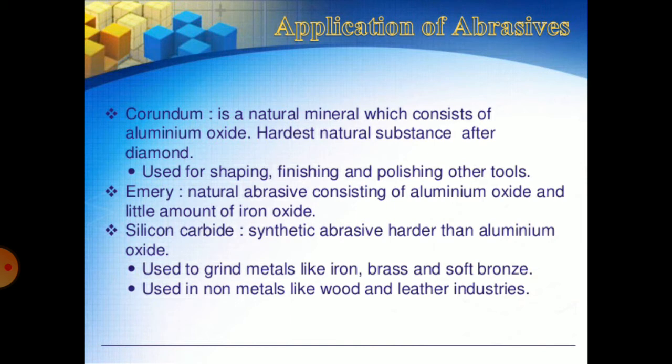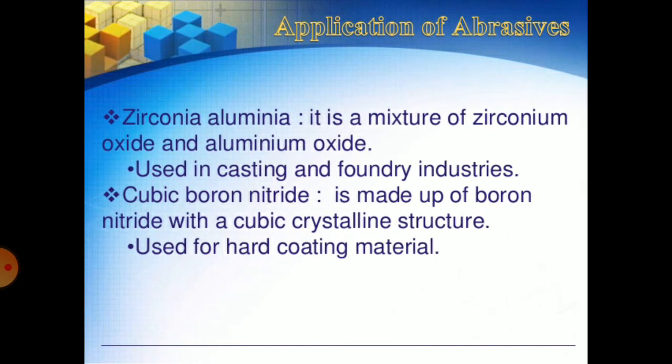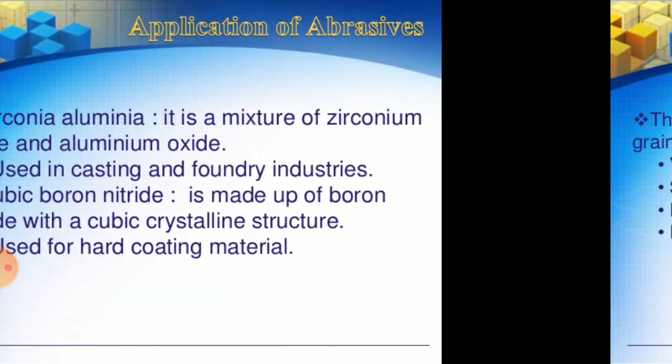Silicon carbide is also used in non-metals like wood and leather industries. Zirconia aluminum oxide is a mixture of zirconium oxide and aluminum oxide, used in casting and foundry industries. Cubic boron nitride is made up of boron nitride with a cubic crystalline structure, used for hard coating material.